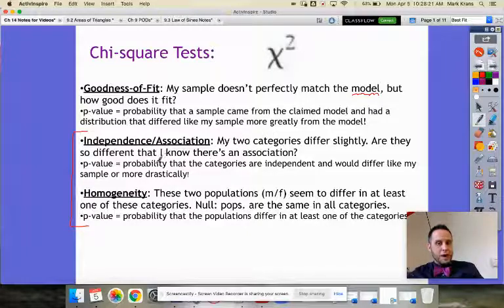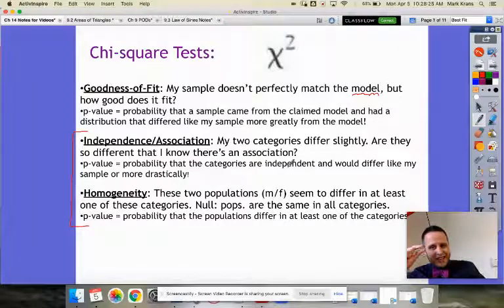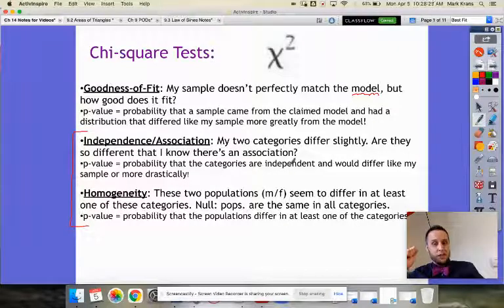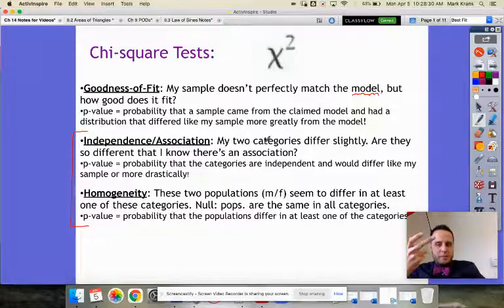And this is the probability that they're actually independent, but we'd see as much of a difference as we saw. This is usually within one sample.